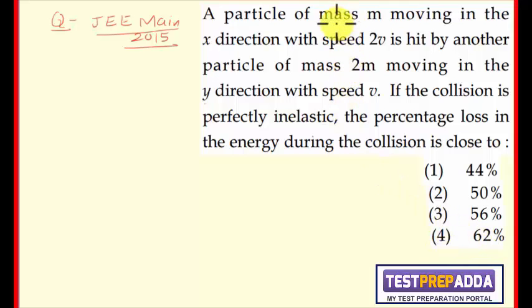The first particle has mass m, speed 2v, in the x direction. So the velocity I can write as 2v i-cap. The second particle is of mass 2m, speed v, in the y direction. So I can write velocity v2 as v j-cap.